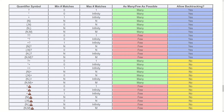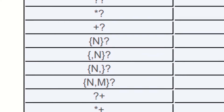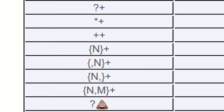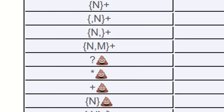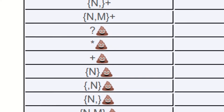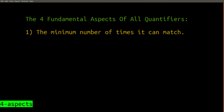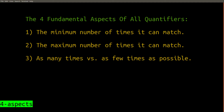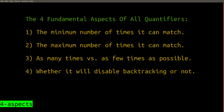Just as promised earlier, you're already 50% done learning everything there is to know about quantifiers. There are many more quantifiers than what we've seen so far, but fortunately there are only four fundamental aspects to every regular expression quantifier. Number one: the minimum number of times it can match. Number two: the maximum number of times it can match. Number three: whether it prefers to match as many times as possible or as few times as possible. Number four: whether it will disable backtracking or not. We've already covered the first two, so we're already 50% done.